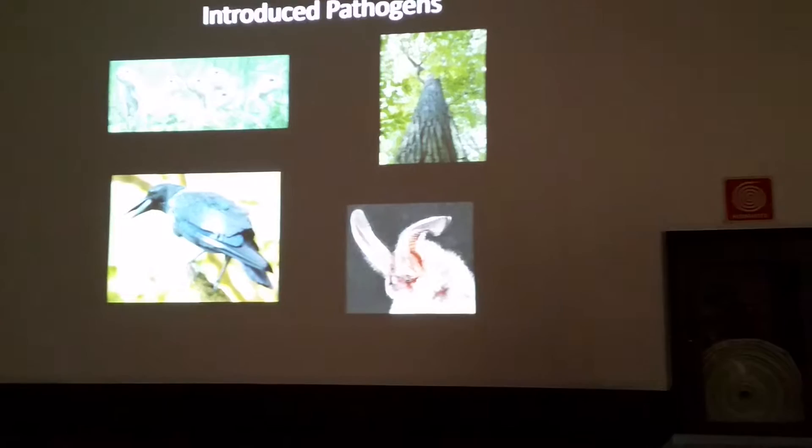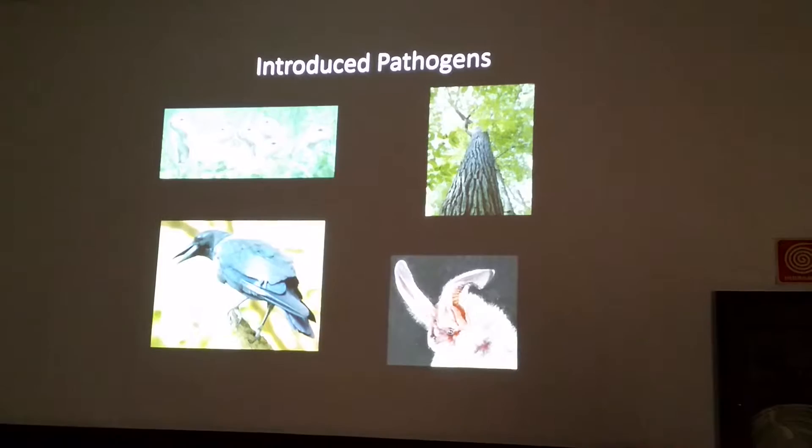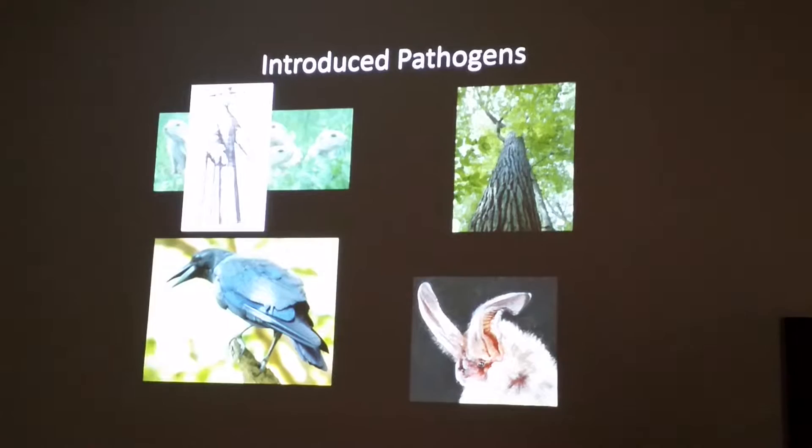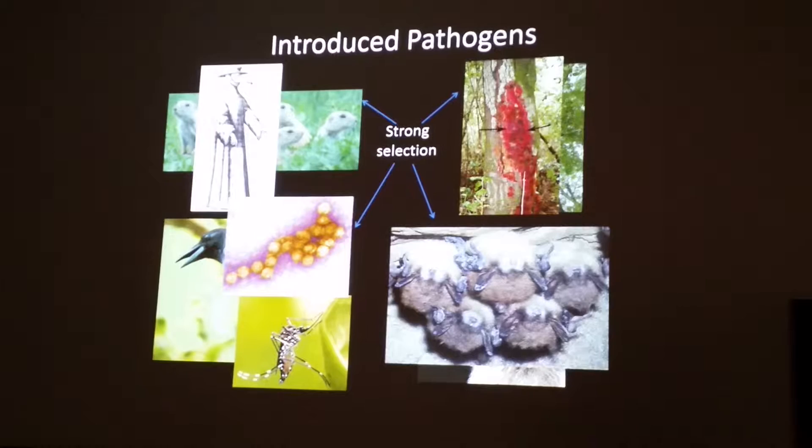Introduced pathogens occur all across the globe and are occurring with increasing frequency as humans increase our movement around the planet and inadvertently introduce invasive species. There are examples of this all over the world, but a few well-known examples from North America are plague in prairie dogs, sudden oak death, white-nose syndrome, and West Nile virus. These introduced pathogens exert really strong selection on hosts which are naive and have no co-evolutionary relationship.